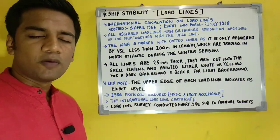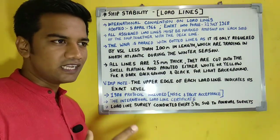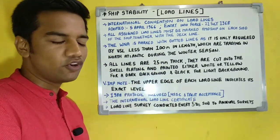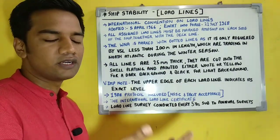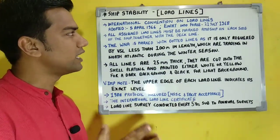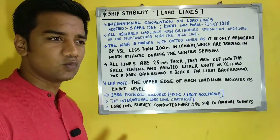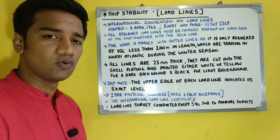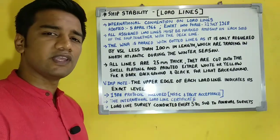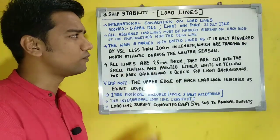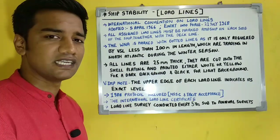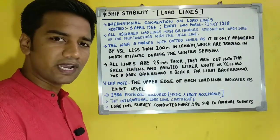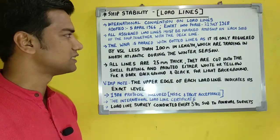Our next topic is load lines. Load lines are very important with respect to the ship because when you load your ship, you load it up to your load lines. There is a whole convention for load lines which IMO has developed — the International Convention on Load Lines, adopted on 5th April 1966, which came into force on 21st July 1968. There are a few notes to cover before moving on to the diagram.